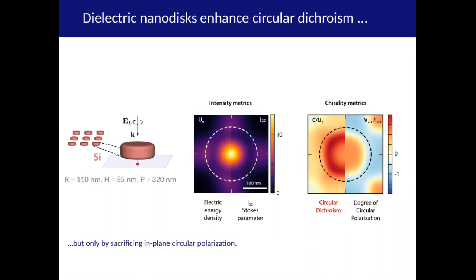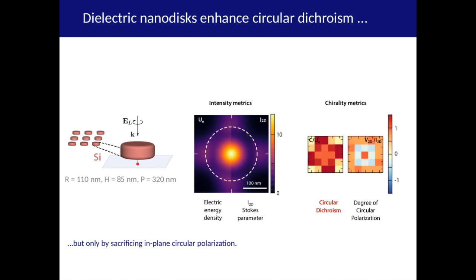But this does not mean that dielectrics can never help with CD enhancement. If we take the same system and work at a different wavelength, we have intensity enhancement with circular dichroism above 1. But now the DOCP is very poor. Again, the Fourier decomposition tells us why. There is strong CD in all evanescent orders, but the DOCP is quite low.